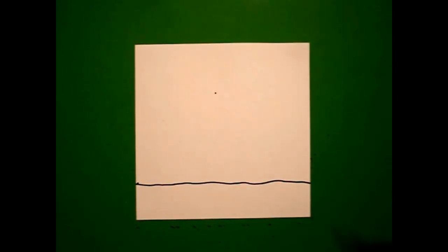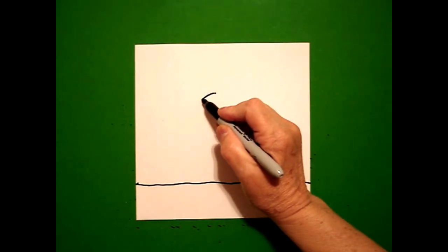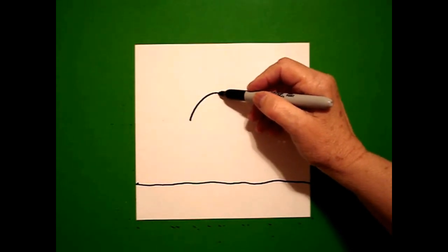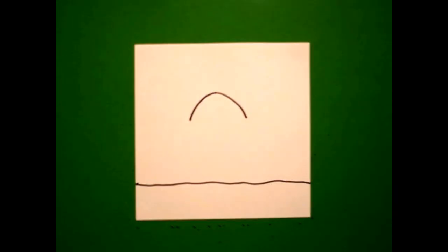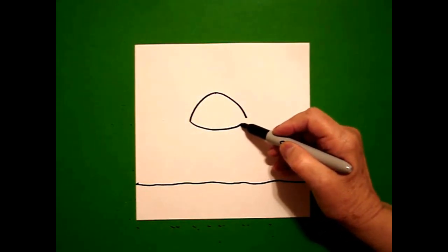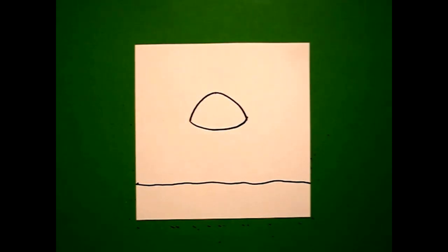And from that dot, I'm going to draw a curved line down on the left, come back to the dot, curved line down on the right. I come back to the left and I'm going to draw a curved line slightly over and connect.